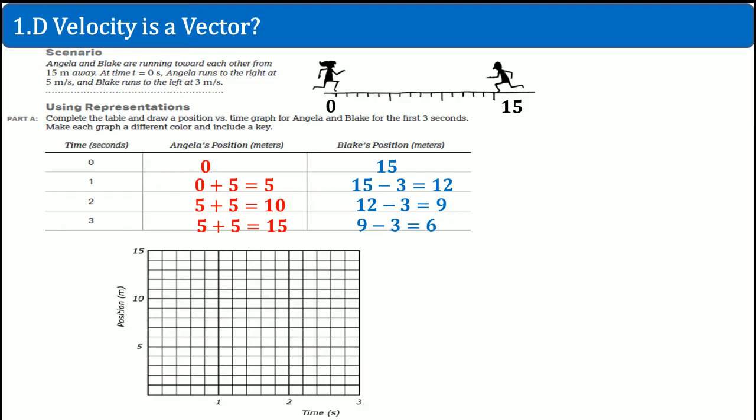Now, if we graph this, Angelica should look like that because she's growing at 5 meters per second each time. And this is Blake's position. He is decreasing because he's running to the left. So this is just going from the chart to graphing it, just making sure that you understand how to graph it.